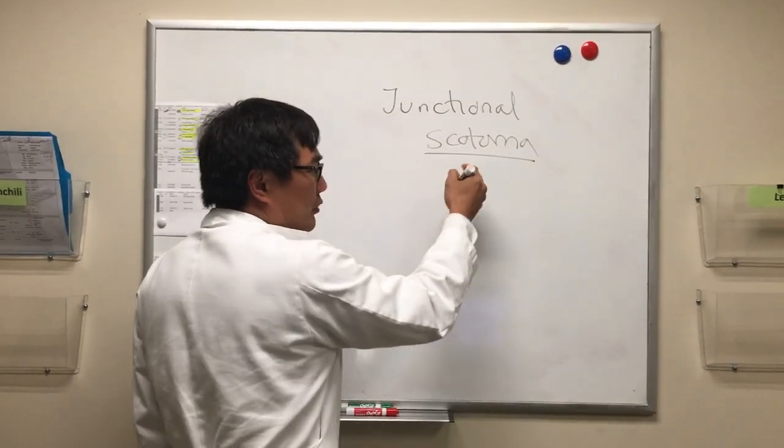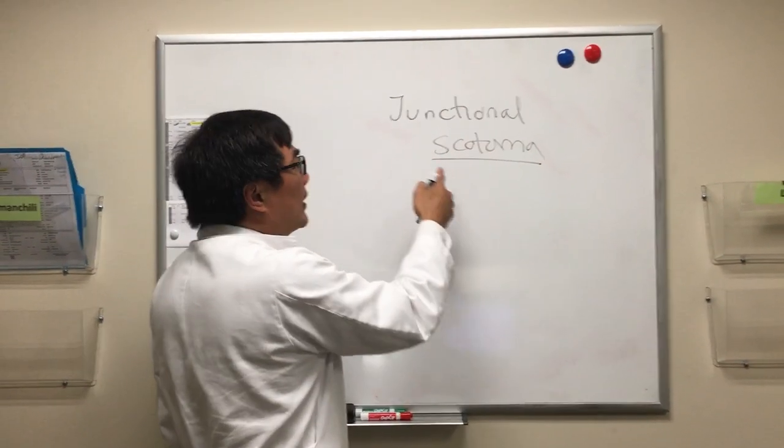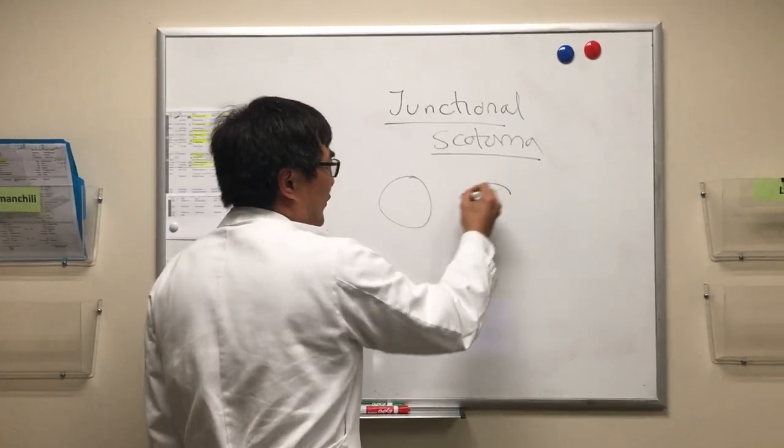A junctional scotoma - scotoma means darkness. Junctional means it's at the junction of the optic nerve and chiasm.